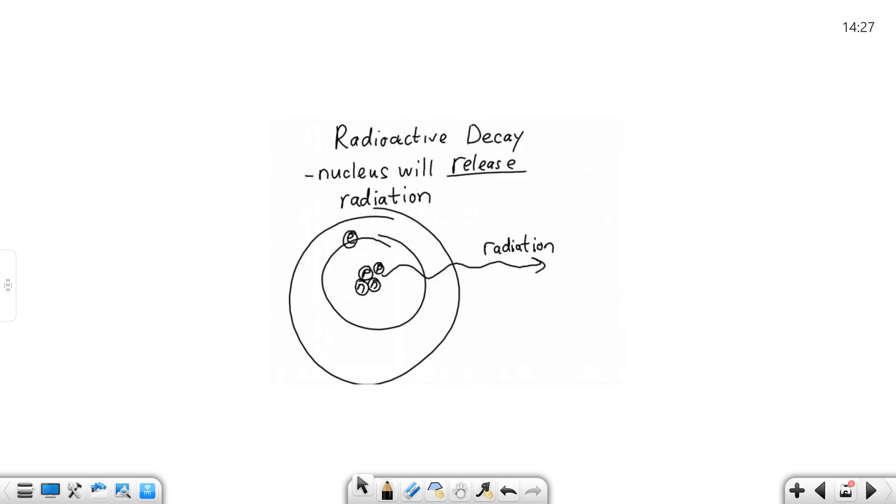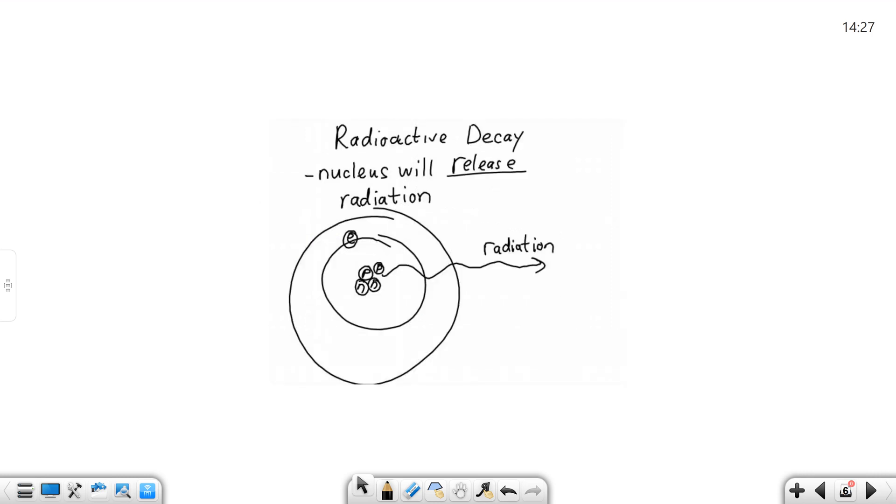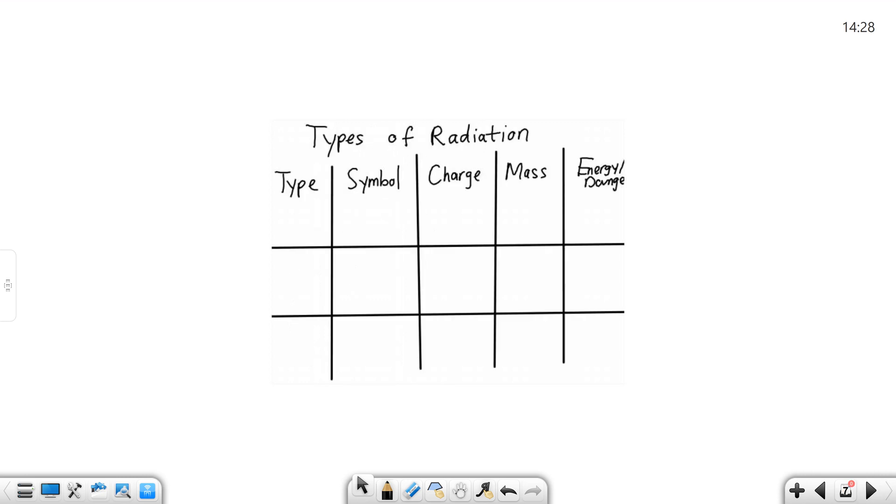So we're interested again what's going to be released by that. So again it kind of just is another picture, my own lovely drawing versus a nice diagram of it, but radioactive decay is where we're going to release this radiation. We're going to be able to figure out what it becomes if I give you some clues about what type of radiation is released.